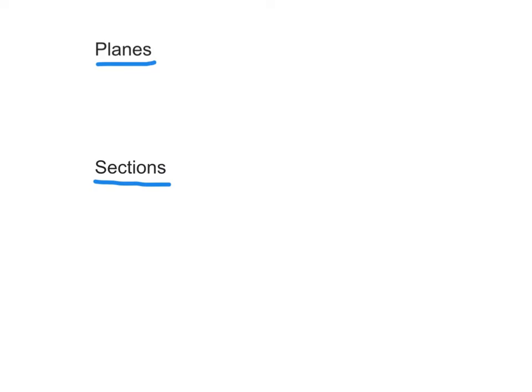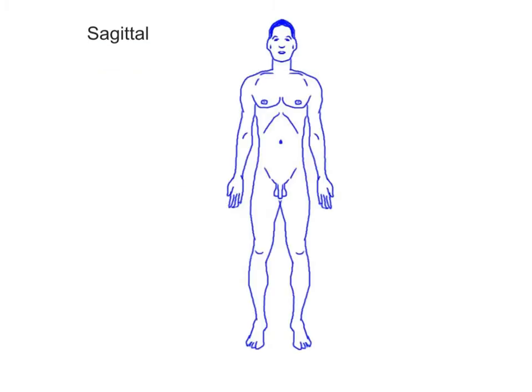Sections are named according to the plane along which the cut is made. A sagittal plane is any vertical plane that divides the body or an organ into right and left sides.